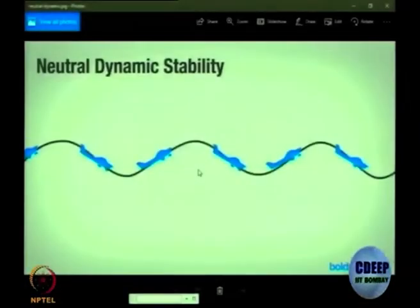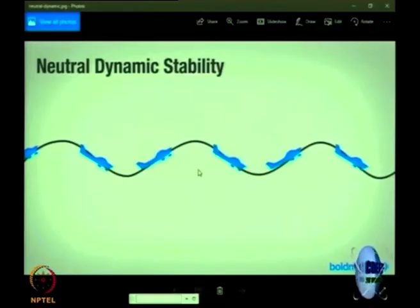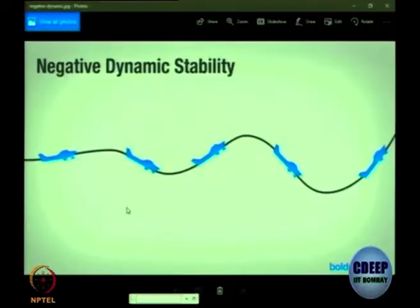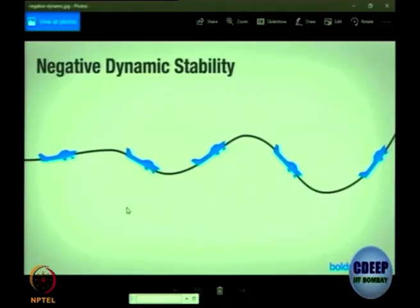In neutral dynamic stability, the oscillations remain the same in amplitude — you disturb the aircraft, it oscillates but neither damps nor grows. This is neutrally stable because it is not unstable. Negative dynamic stability is when oscillations worsen and increase further with time. In today's modern aircraft, a dynamically unstable aircraft can still be flown using automatic flight control systems that sense position and movements and deflect the control surfaces automatically.